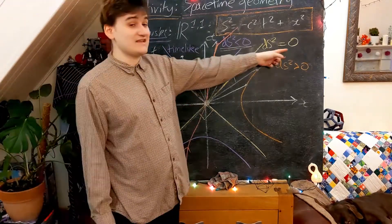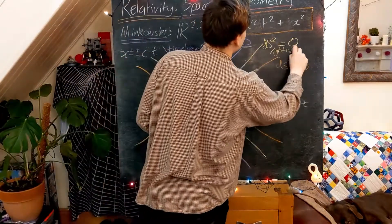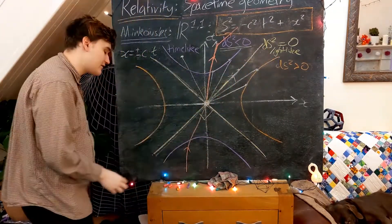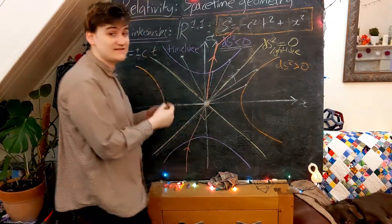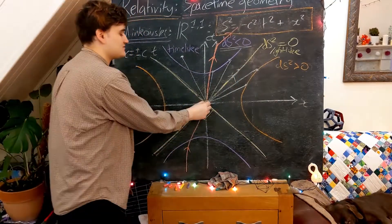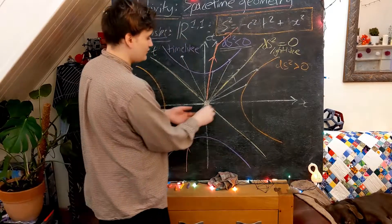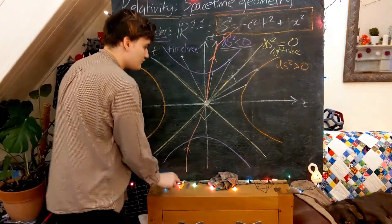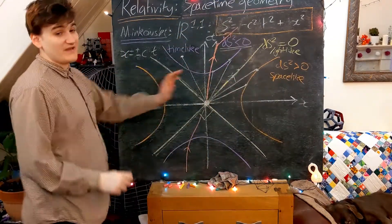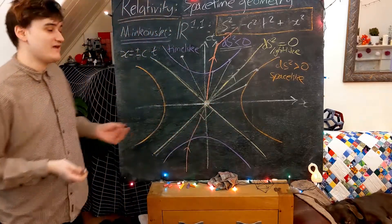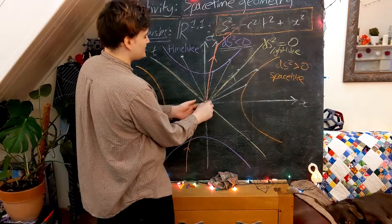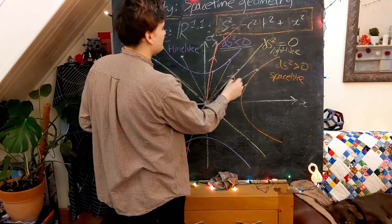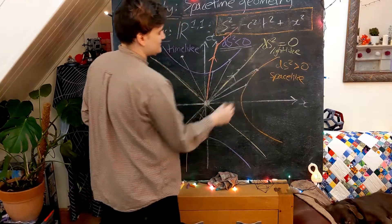The other definitions: if ds squared equals zero, we say it's light-like or null. Any two points in Minkowski space that are light-like separated have ds squared equal to zero, and you would have to travel on a light-like world line to reach that point. If you're looking at a point where the line element is greater than zero, we say that this is space-like separated. This means you would not be able to reach that point in spacetime without travelling faster than the speed of light or following a space-like world line.